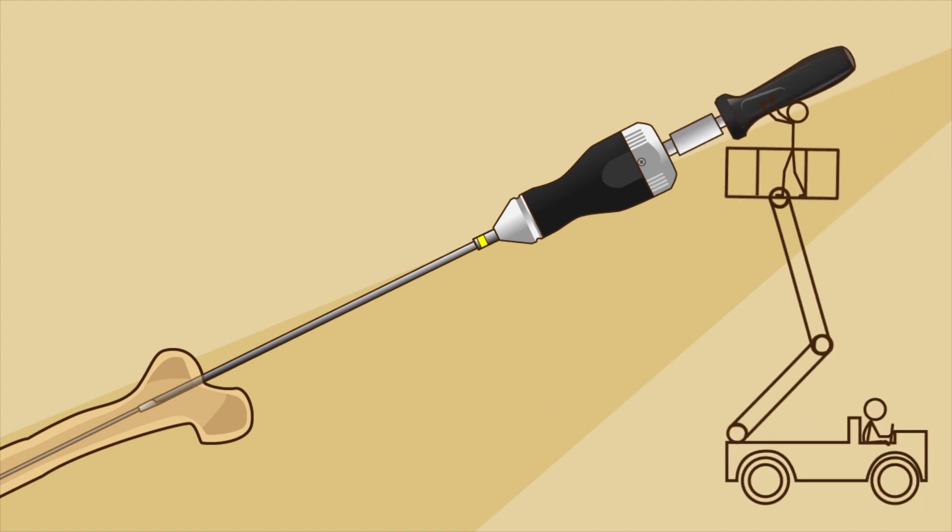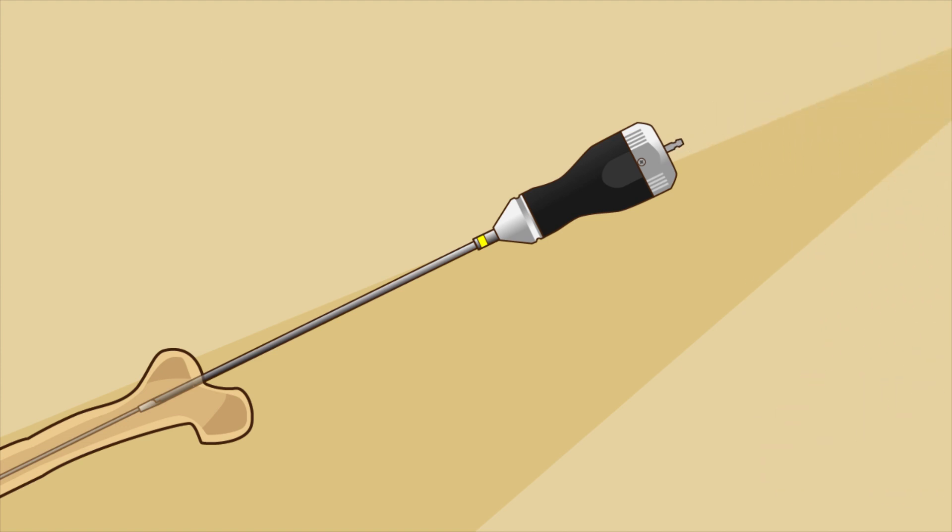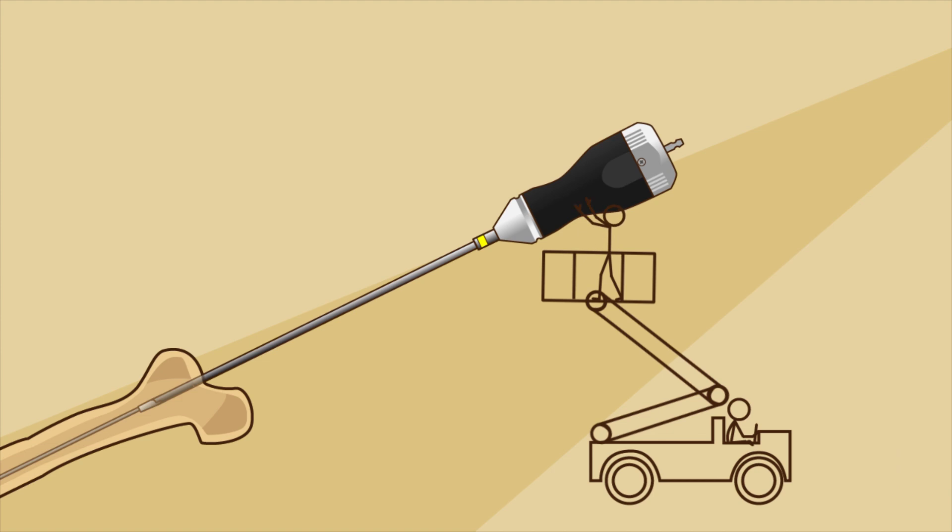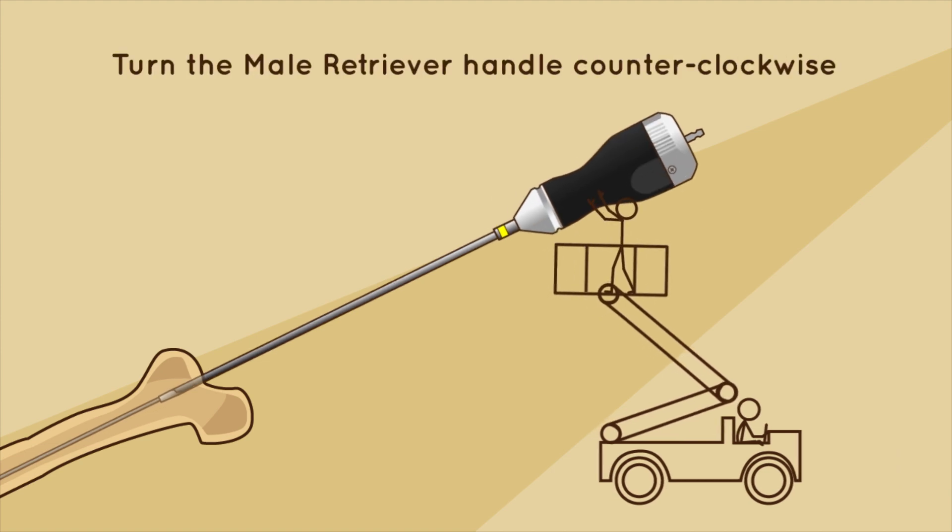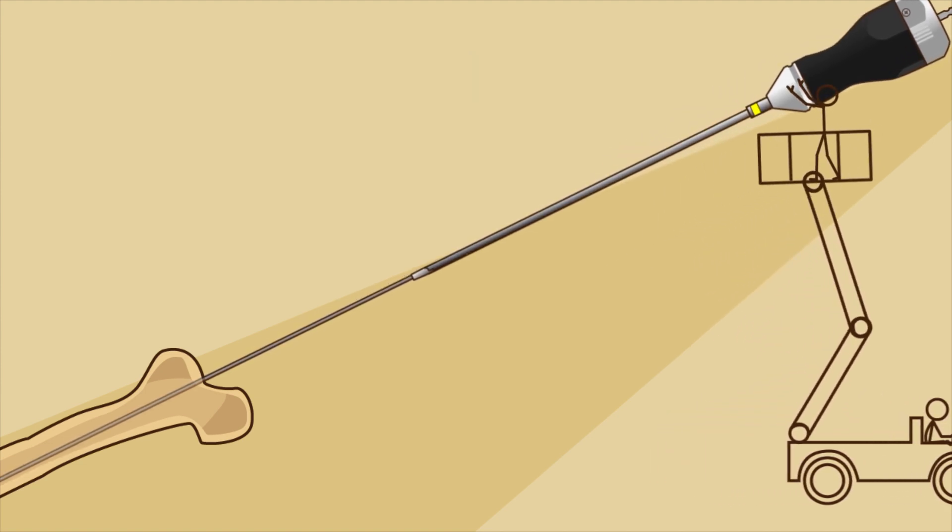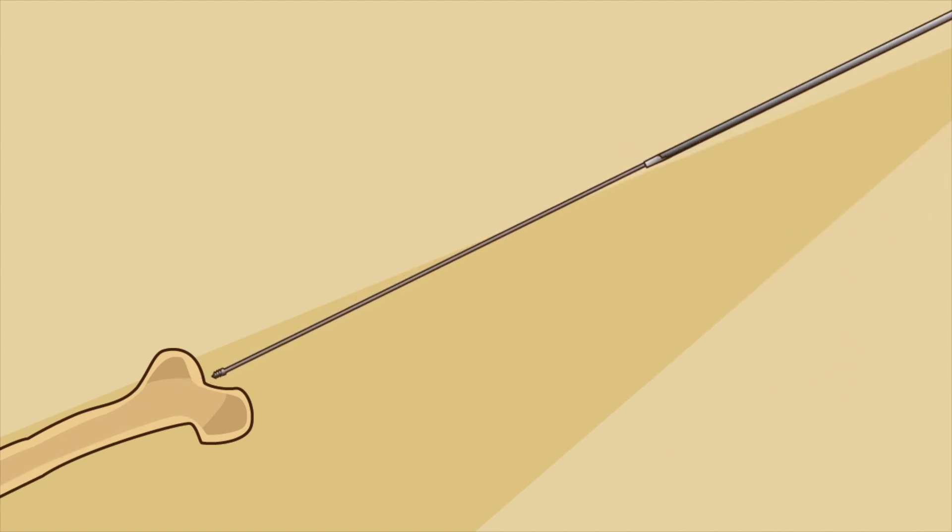To lock the shaft over the male component, turn the torque handle counterclockwise until the torque limit is reached. An audible click will be heard. Remove the torque handle after tightening. Once the nail is secured in the instrument, turn the male retriever handle counterclockwise. Simultaneous rotation and pulling might be necessary as the male component is unscrewed.